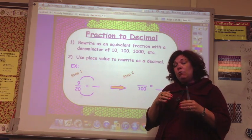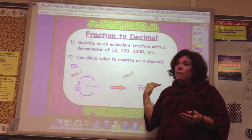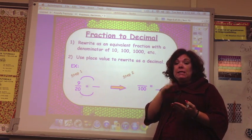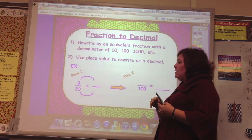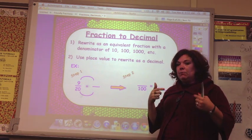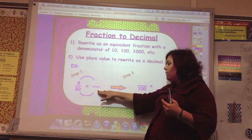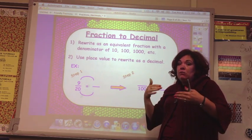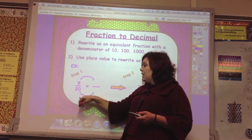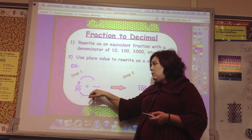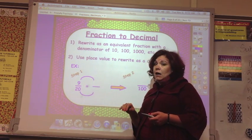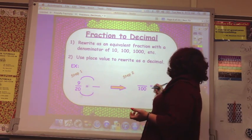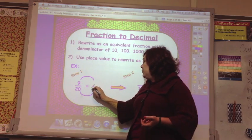So this is what that looks like. If you have 9 20ths, well, place value—whenever you're saying decimals, and we'll go over this in a minute—you're saying 10ths, 100ths, 1,000ths. So to write it as a decimal, you need to have a denominator that's 10ths, 100ths, or 1,000ths. Well, it's not going to make sense to go to 10ths because you can divide this by 2, but you can't divide 9 by 2. So the next thing you'd want to go to is 100.